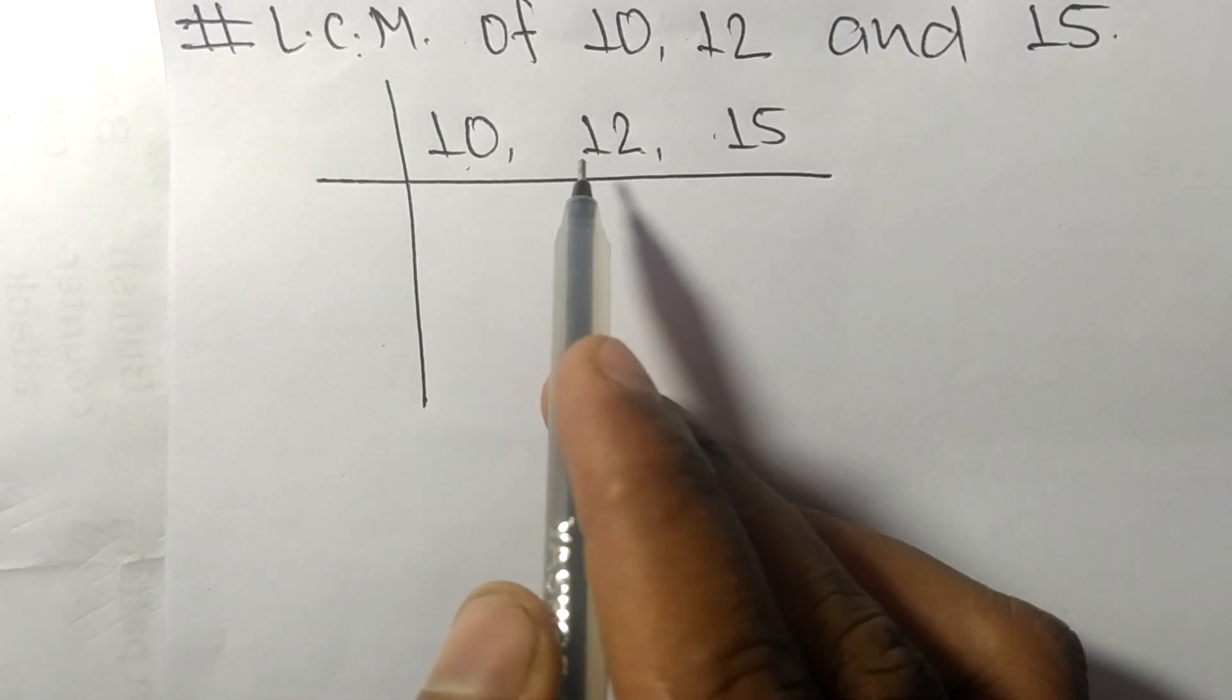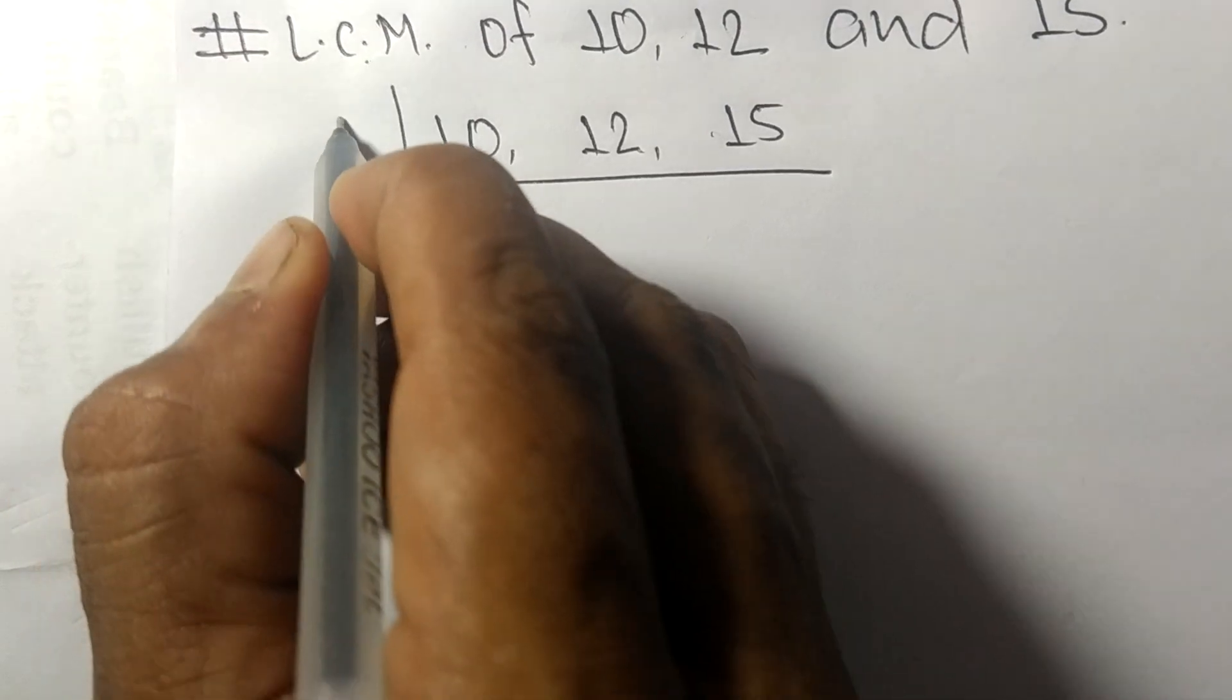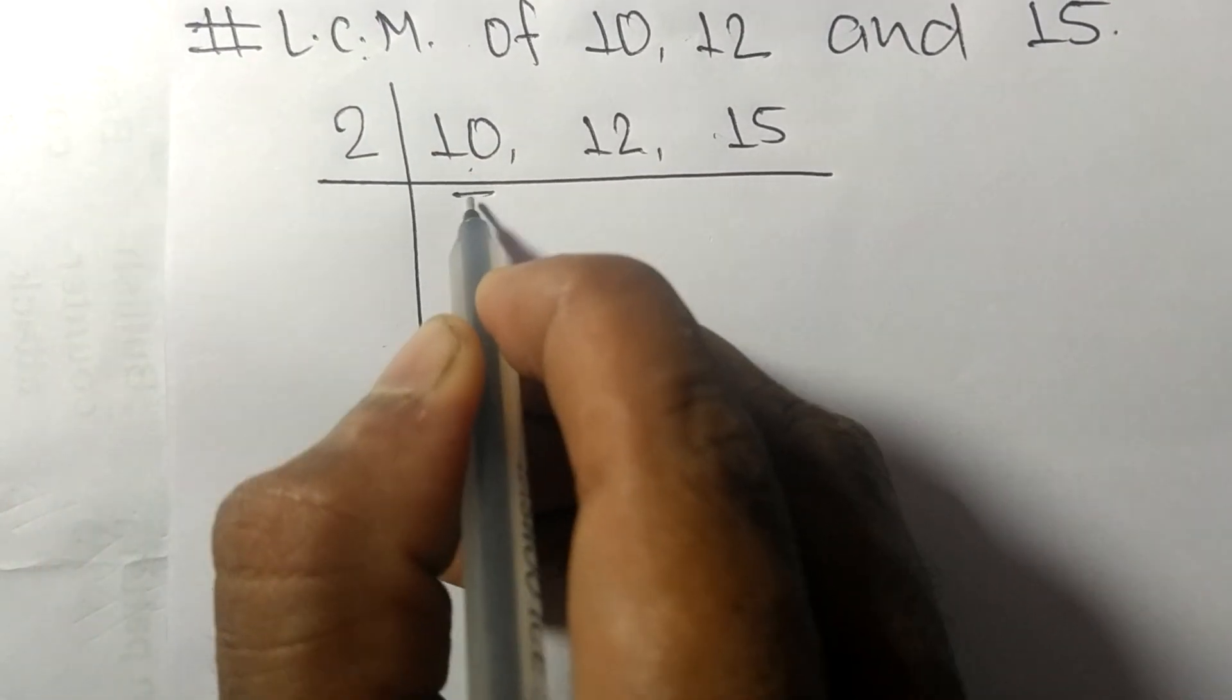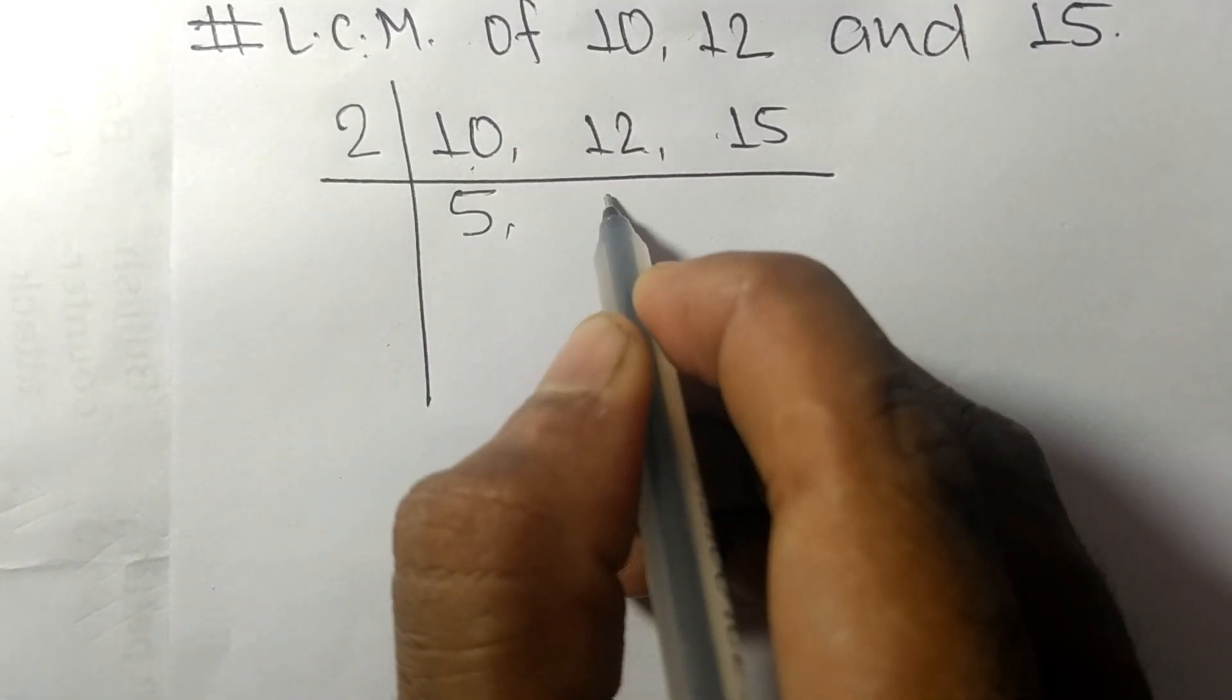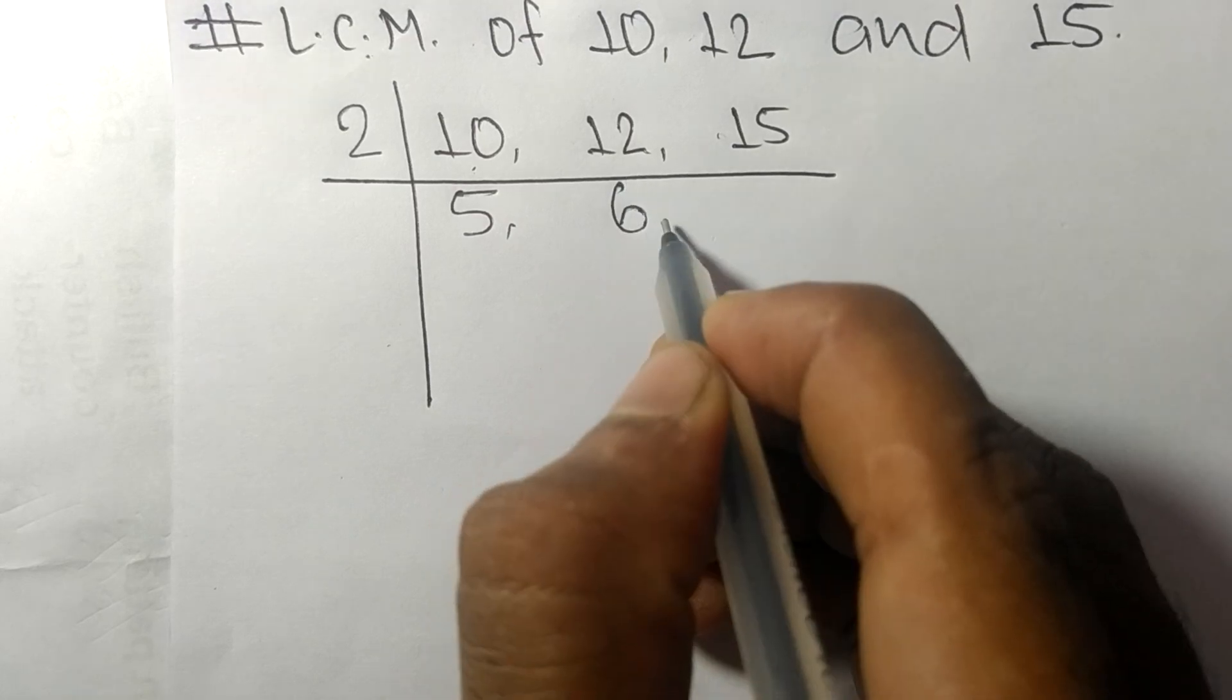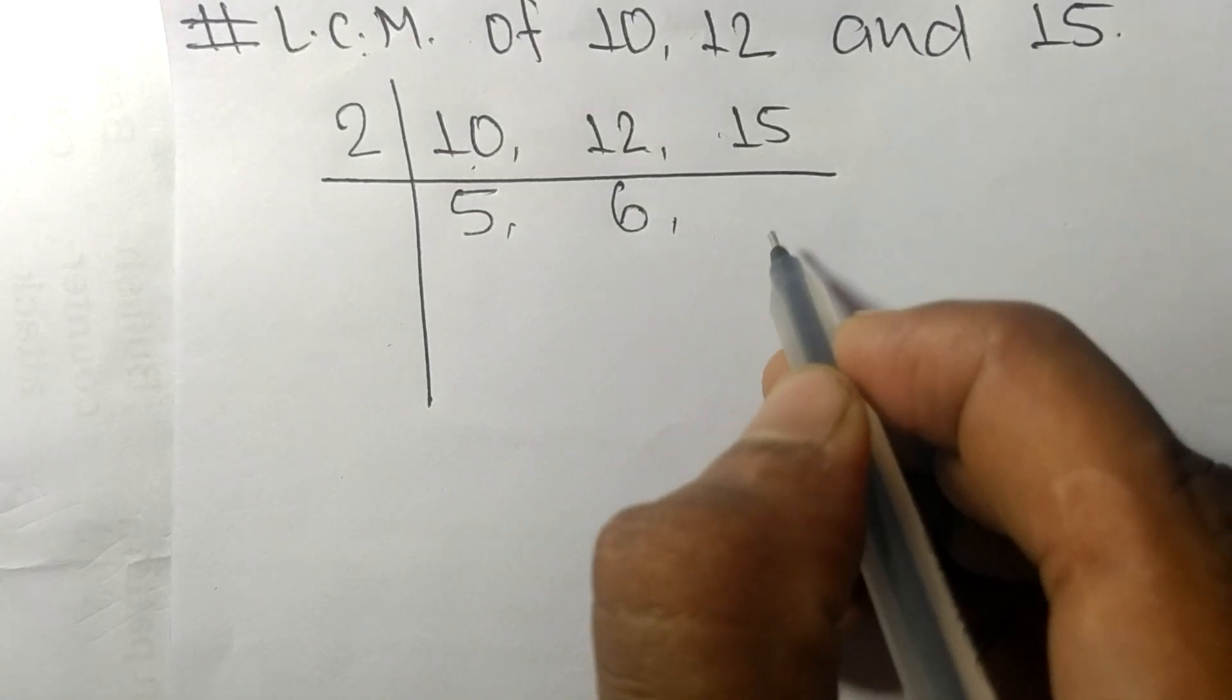10 and 12 are exactly divisible by 2. 2 times 5 means 10, 2 times 6 means 12. 15 is not divisible, so it remains the same. Now we have 5, 6, and 15.